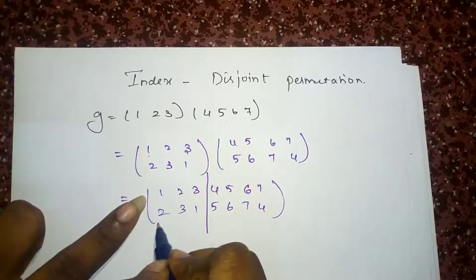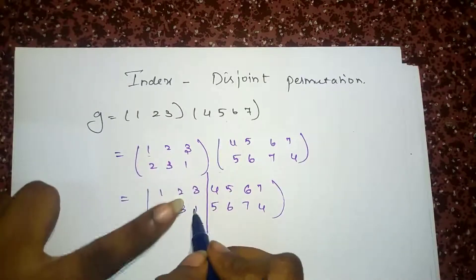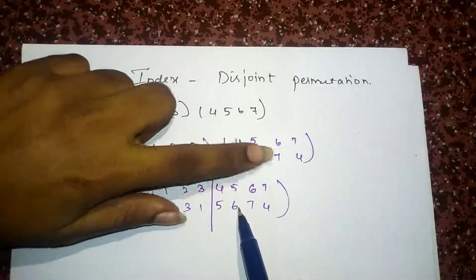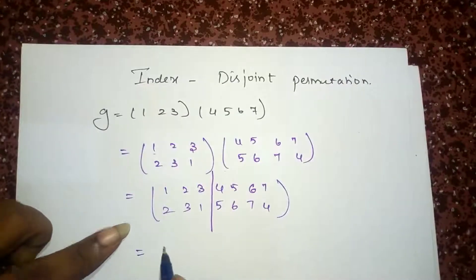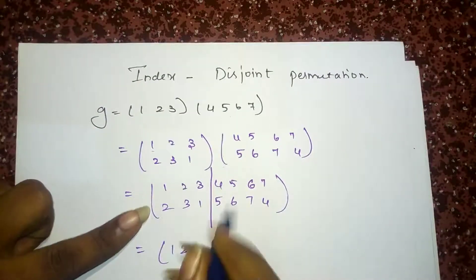If you have seen it, 1 is mapped to 2, 2 is mapped to 3, 3 is mapped to 1, 4 to 5, 5 to 6, 6 to 7, 7 to 4, same. If you are going to write the short form of it, you will get the same permutation.